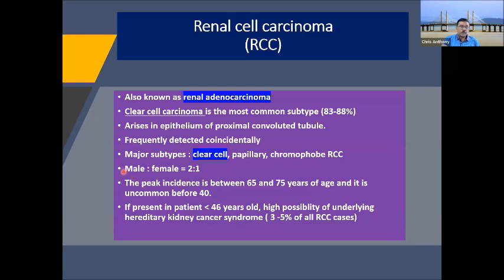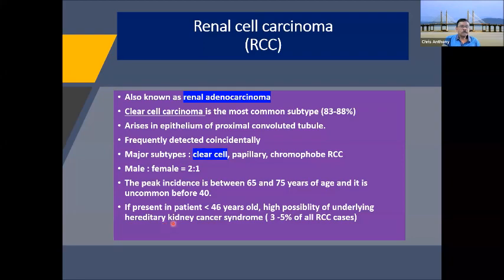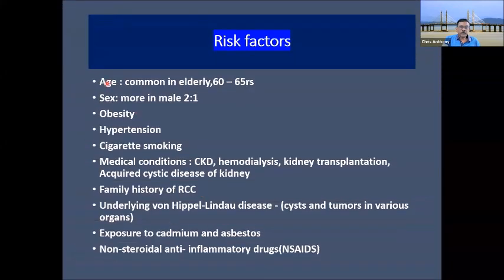The male to female ratio is approximately 2:1. Peak incidence is between 65 to 75 years of age and it is uncommon below 40. If it presents before age 40, one should think of a hereditary condition. Risk factors include age over 65, male sex, and obesity, hypertension, and cigarette smoking.